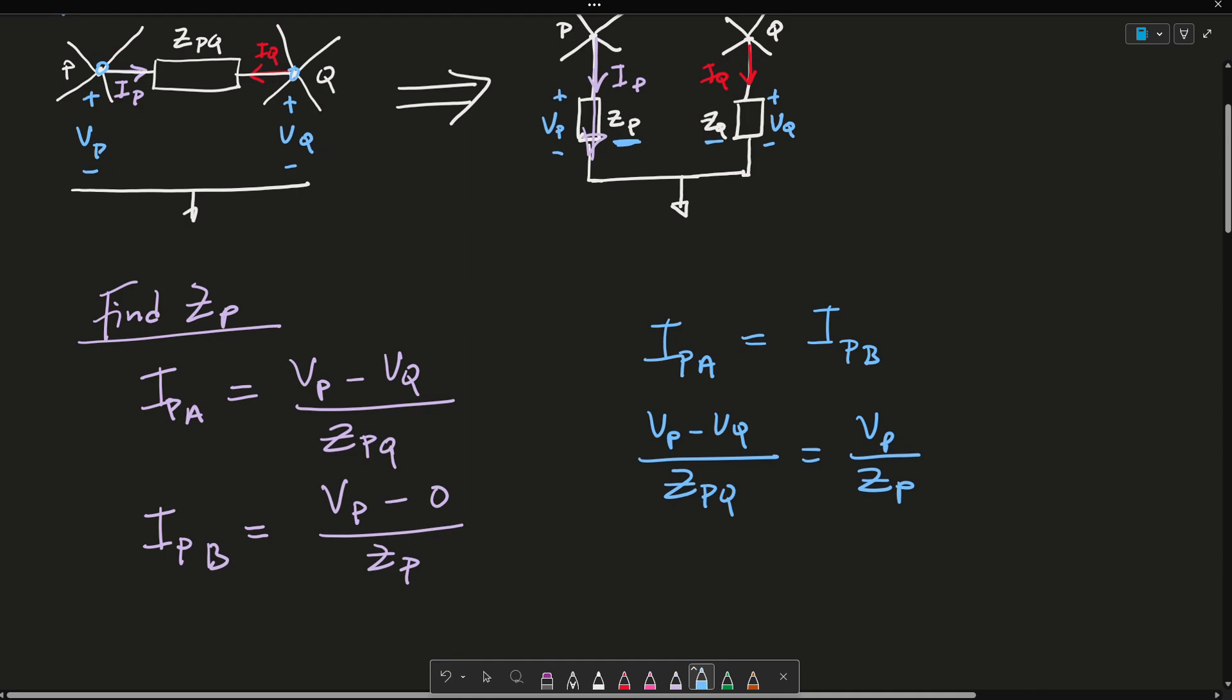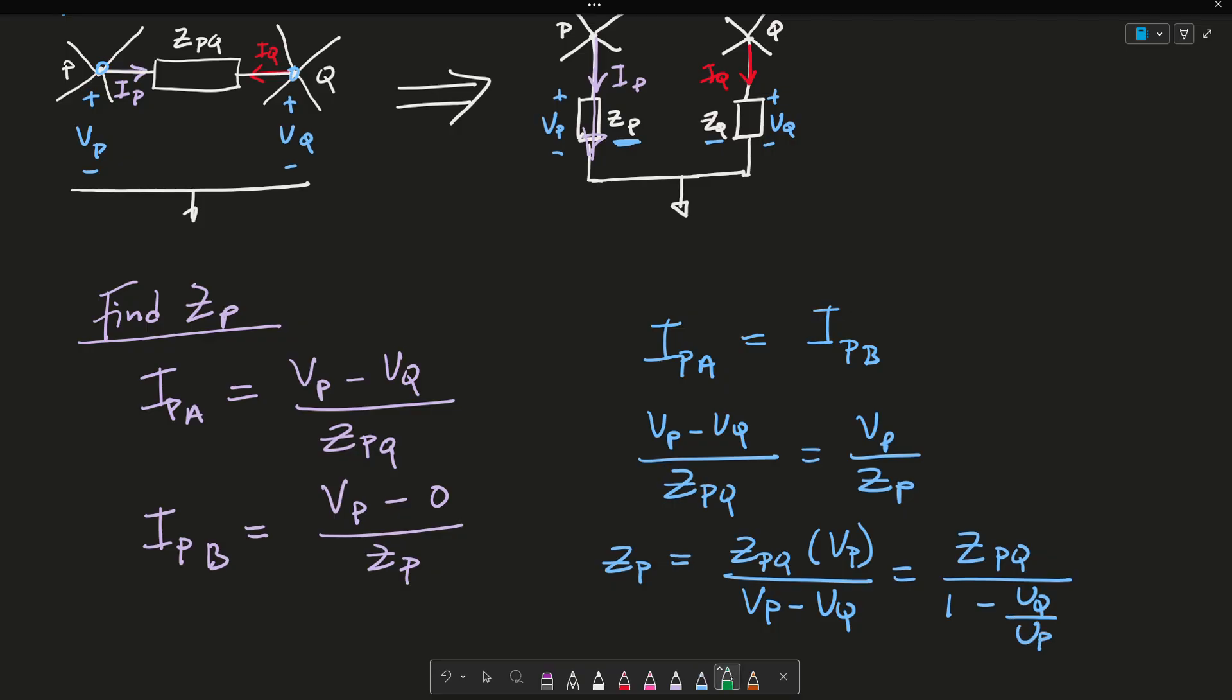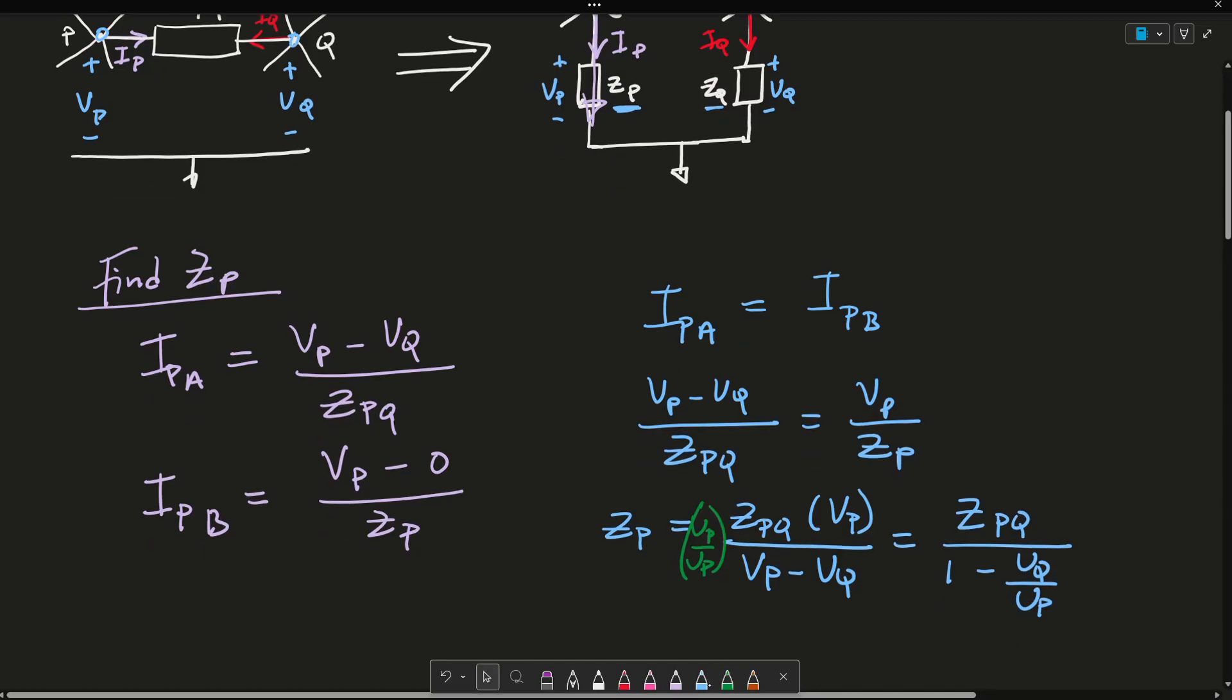So this is VP minus VQ over ZPQ equals VP over ZP. If I solve for ZP, multiply it to this side, ZP is then going to be equals to ZPQ times VP over VP minus VQ, which equals ZPQ over 1 minus VQ over VP. All I did here was I multiplied by VP over VP. So in short, this equals ZP, let me call this equation 1. This is my first equation that goes with Miller's theorem.